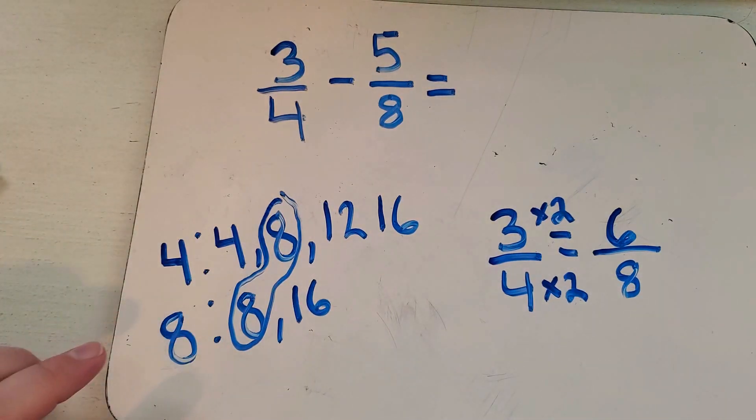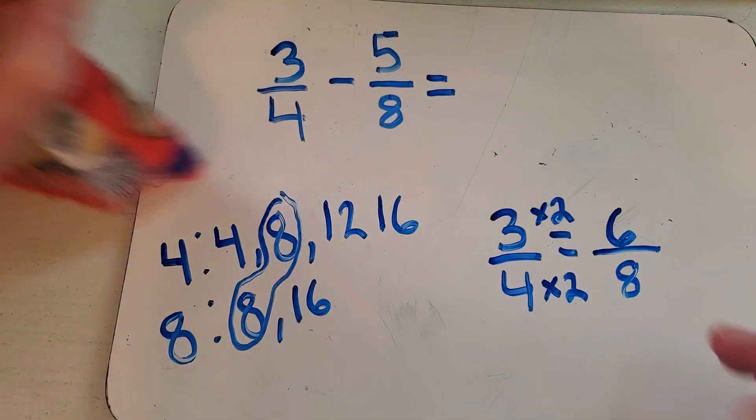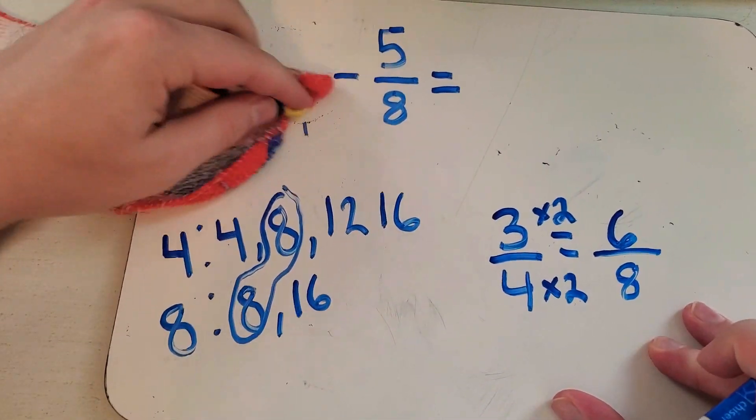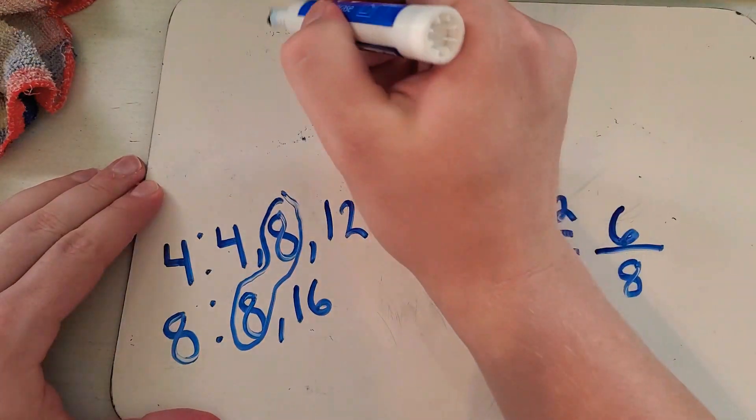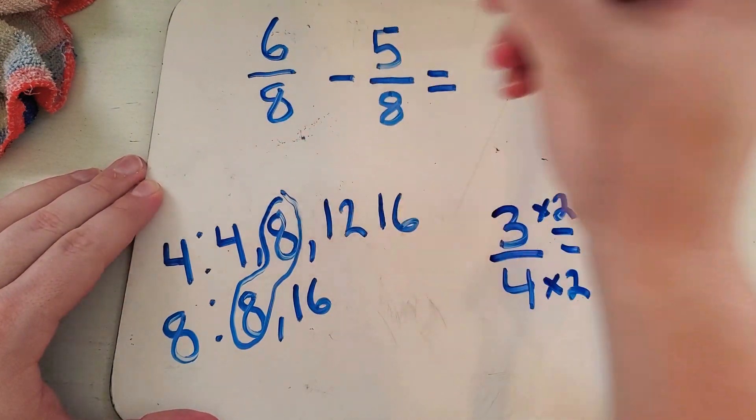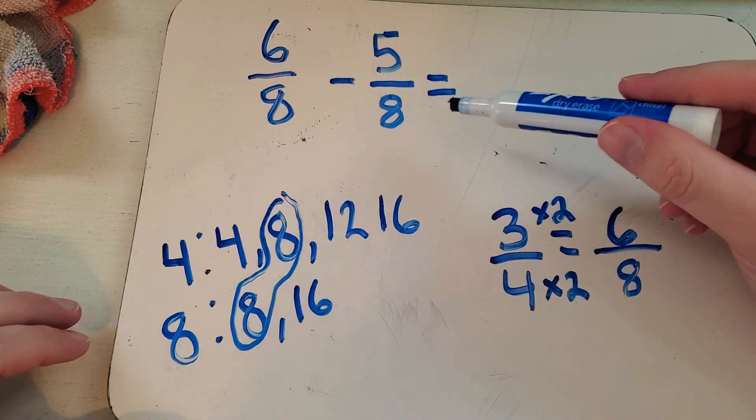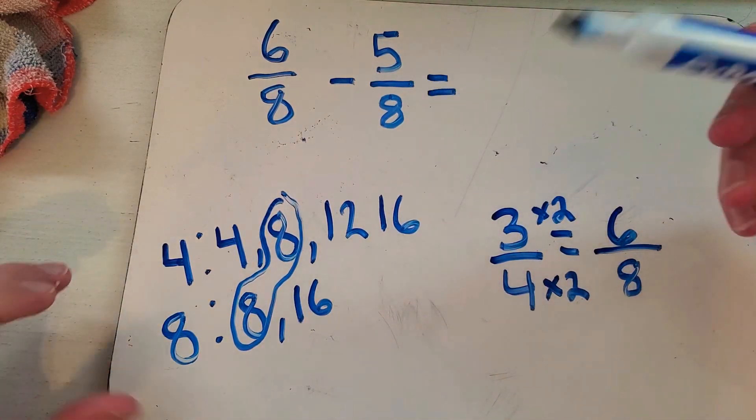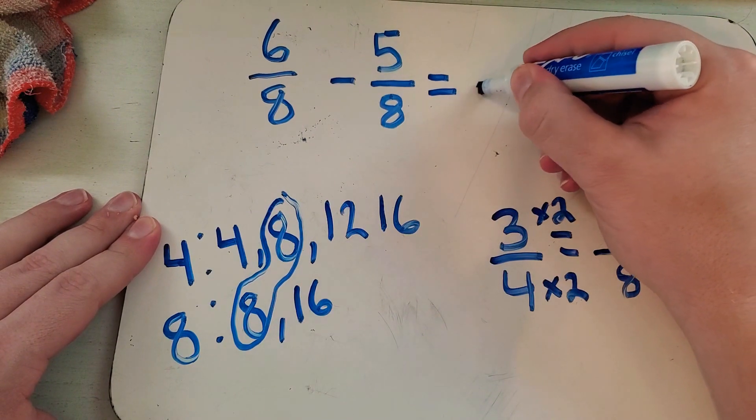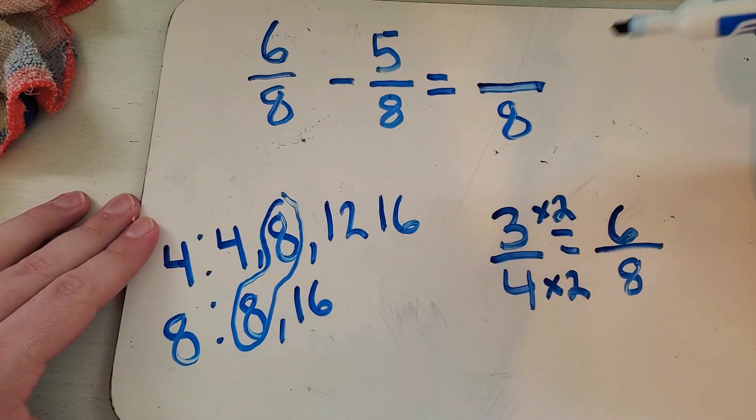So I can actually go up here and change my fraction to instead of three fourths, I can change it to six eighths. So I just do six over eight. And now I just subtract. Now remember, when you're subtracting fractions, your denominator does not change.